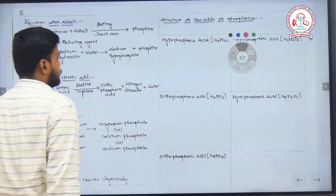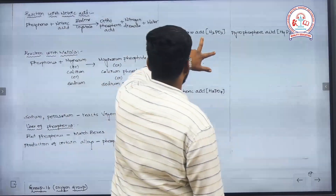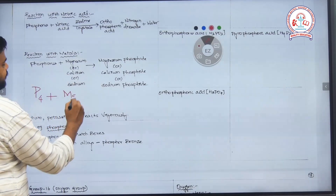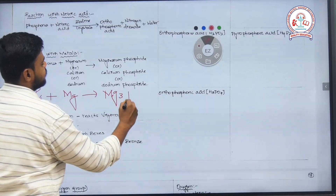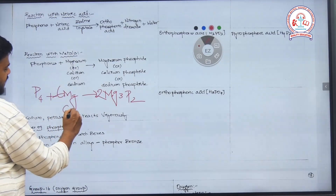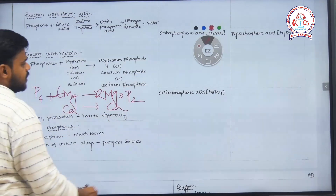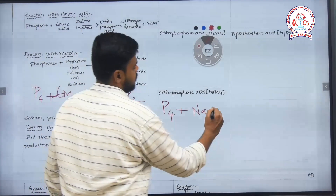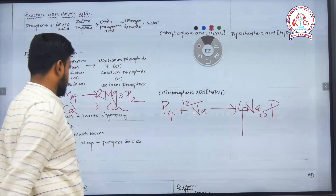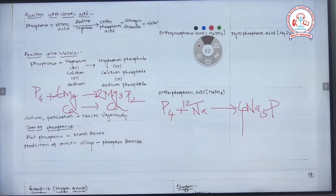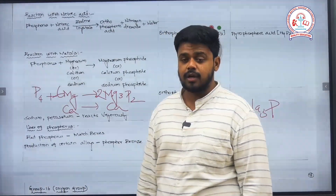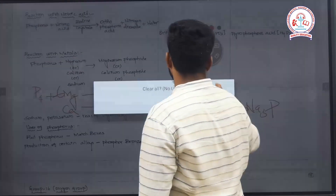The reaction with metals: phosphorus reacts with metals to form phosphides. Phosphorus reacts with magnesium to form magnesium phosphide — balancing gives a coefficient of 2 for Mg3P2. Similarly with calcium, replace magnesium with calcium. Phosphorus reacts with sodium to form Na3P, sodium phosphide: with P4 and 12 Na giving 4 Na3P. The uses of phosphorus include manufacture of match boxes, and manufacture of alloys like phosphor bronze.